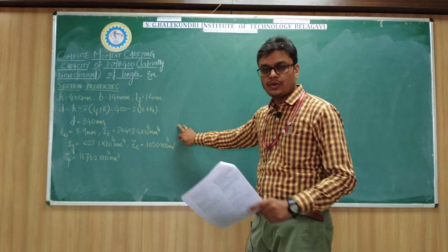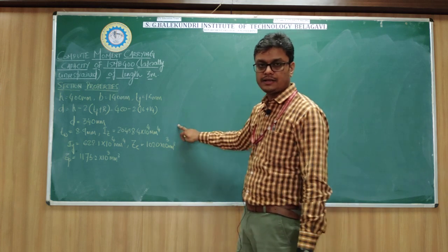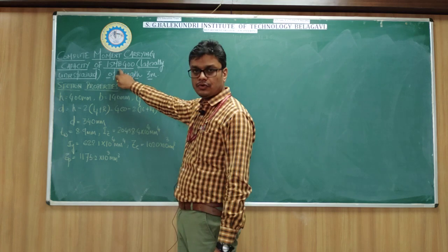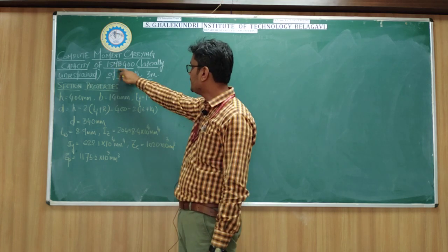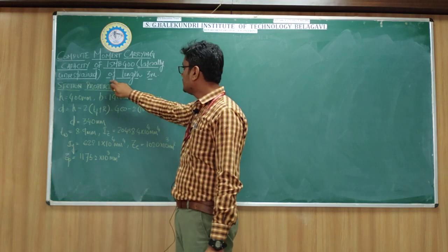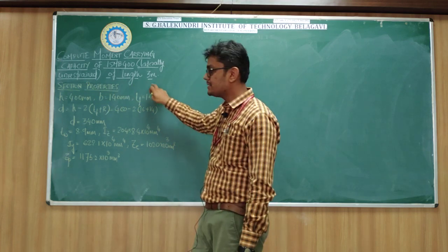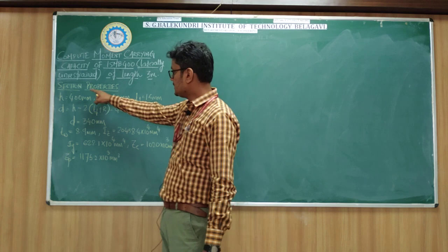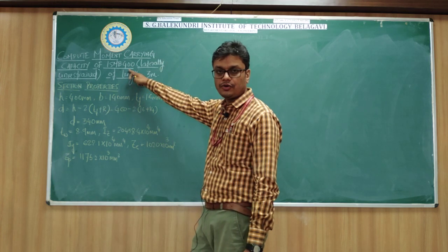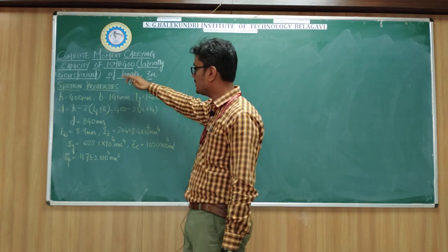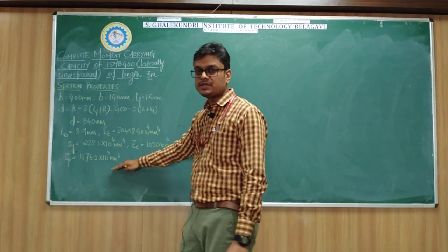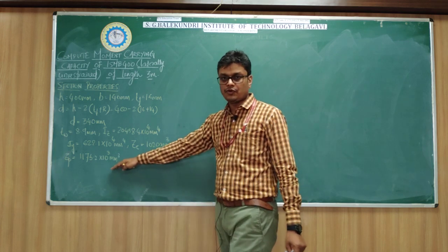Here we will look at a simple example to find the moment carrying capacity of an ISMB 400 beam that is laterally unrestrained. The length of the beam is 3 meters. The section properties of ISMB 400 can be found using any steel table or handbook. These are all the section properties you have to read from the steel table or handbook for hot rolled sections.